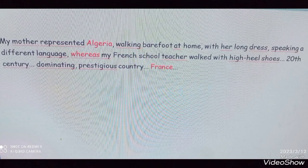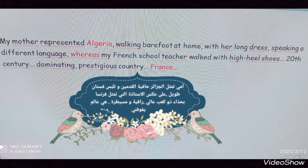So, what is the sentence? My mother represented Algeria, walking barefoot at home, with her long dress, speaking a different language. Whereas — it's a conjunction which expresses differences — my French school teacher walked with high heels, representing the 20th century dominating prestigious country, France. And those are the two opposite worlds: mother and French teacher, or Algeria and France.